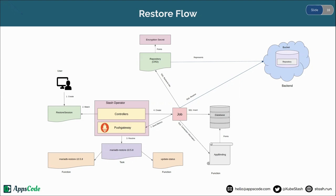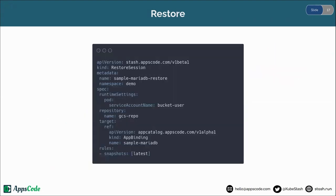Let's restore our data. This is the restore session YAML. Here you can see we have provided the service account name — bucket-user — similarly to the backup configuration, which is bound with the IAM service account. We have also provided the repository name gcs-repo, same as in our backup configuration, and the target which is sample-mariadb. Let's create this restore session.